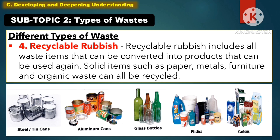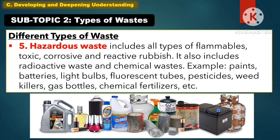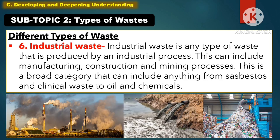Another type of waste is the recycled rubbish. Recycled rubbish includes all the waste items that can be converted into products that can be used again. Solid items such as paper, metals, furniture, and organic waste can all be recycled. Another type of waste is hazardous waste. This includes all types of flammables, toxic, corrosive, and reactive rubbish. It also includes radioactive waste and chemical waste. Examples are paints, batteries, light bulbs, fluorescent tubes, pesticides, weed killers, gas bottles, and chemical fertilizers. Another type of waste is industrial waste, which is produced by an industrial process. This can include manufacturing, construction, and mining processes — a broad category that can include anything from asbestos and clinical waste to oil and chemicals.